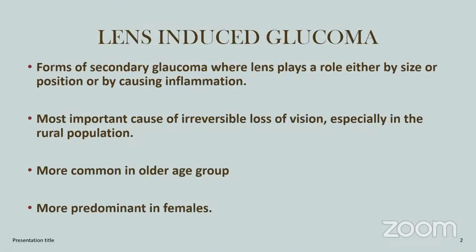Lens-Induced Glaucoma is a form of secondary glaucoma where the lens plays a role either by size, position, or by causing inflammation. It is the most important cause of irreversible loss of vision, especially in the rural population and after COVID, and is more common in the older age group and more predominant in females.